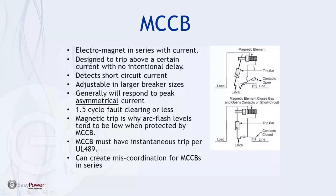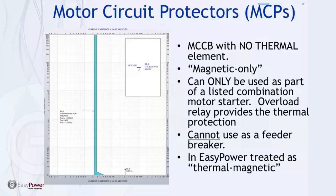The electromagnetic element is a coil in series with the current that at a certain level will actuate and interrupt. These work in conjunction in a molded case circuit breaker. According to UL listing, the molded case circuit breaker must have an instantaneous trip. Because all MCCBs have an instantaneous trip, this causes the potential for miscoordination. A special case is the motor circuit protector — basically there's no thermal element, only magnetic, so we only have an instantaneous trip.